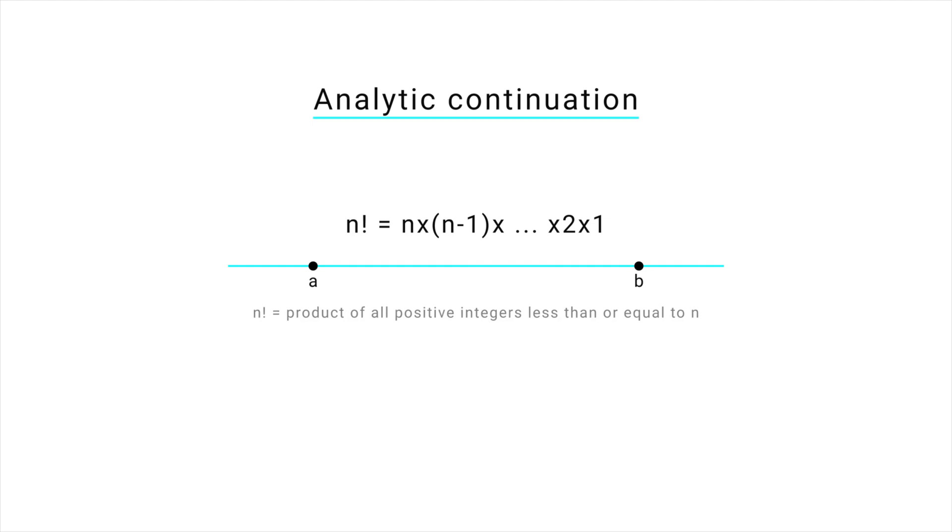the factorial function denoted by n factorial is defined as the product of all positive integers up to n. So for example, 3 factorial is equal to 3 times 2 times 1 equal to 6. But what if we want to find the value of factorial function for non-integer like half?